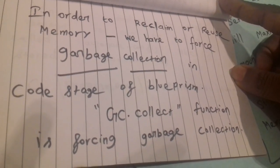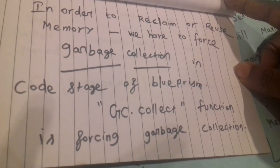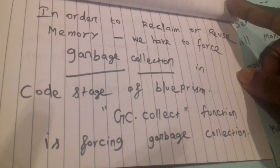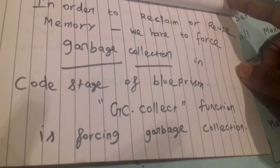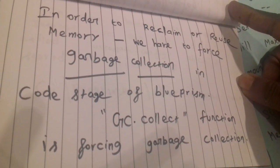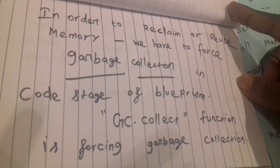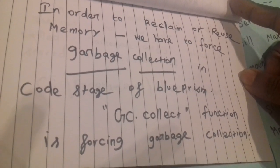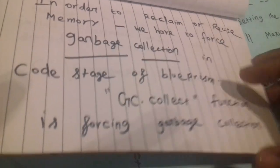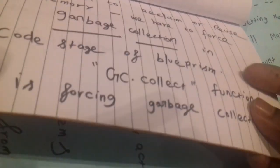If you want to use code stage, you can add the .NET System DLL with the GC.Collect function for forcing garbage collection.